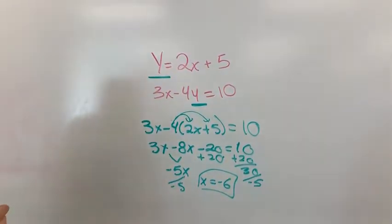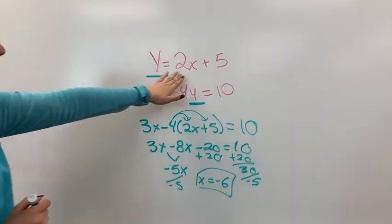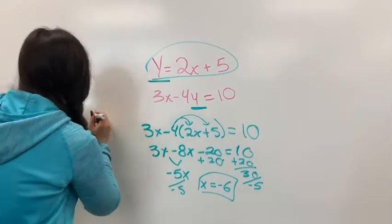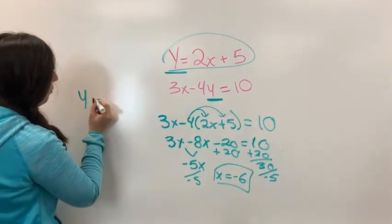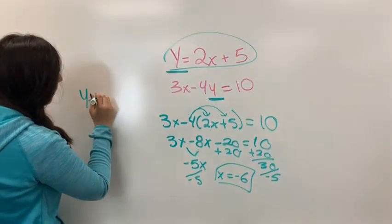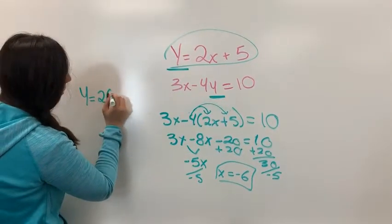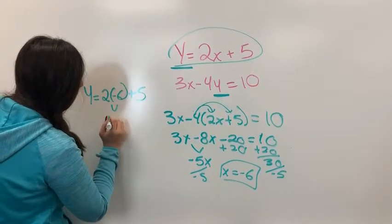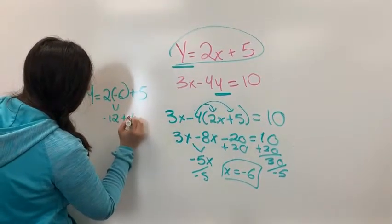And now if you want to get y by itself instead of having this whole thing, you can just use the top equation. And you can do y equals 2 times negative 6 plus 5. And so this equals negative 12 plus 5.